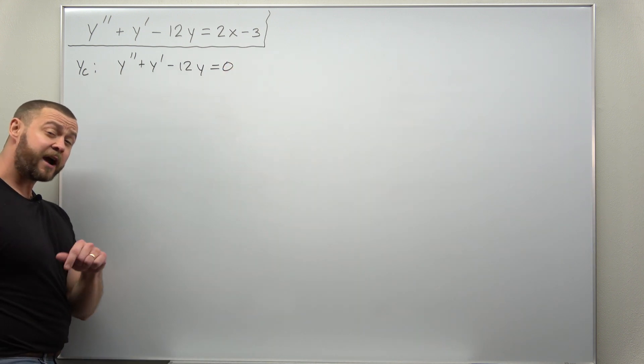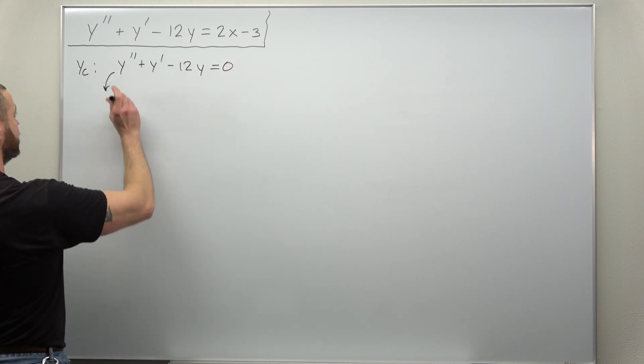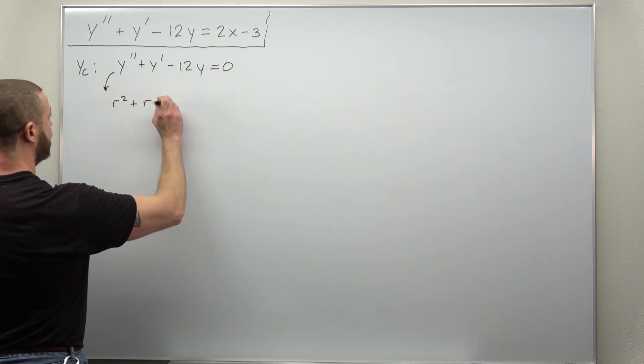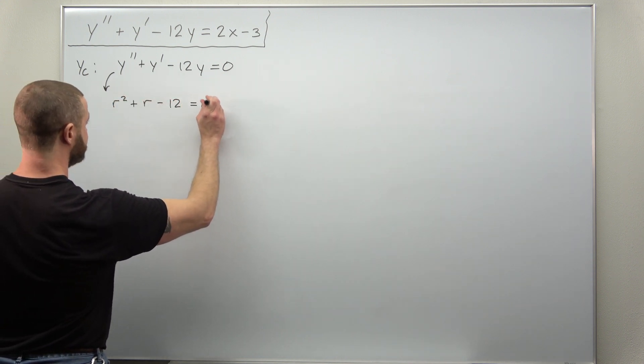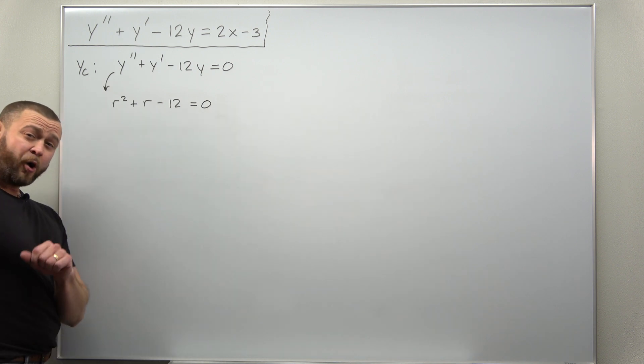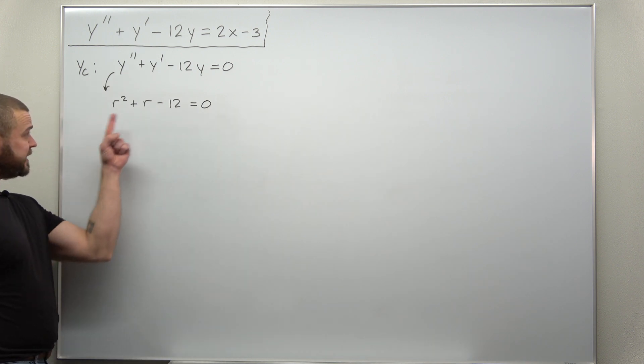We can convert to the characteristic equation r squared plus r minus 12 equals zero. Always try to factor that and I believe that does here.